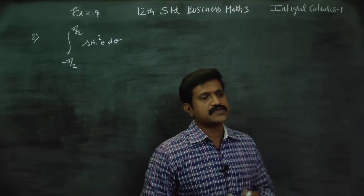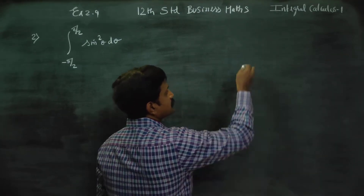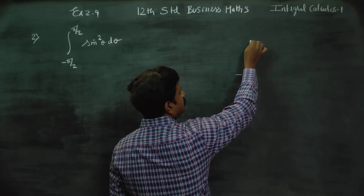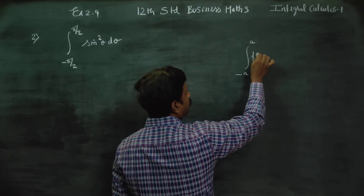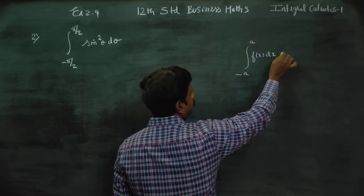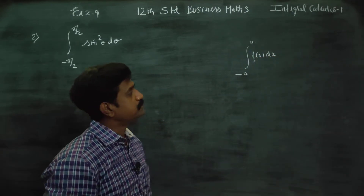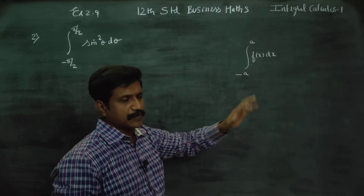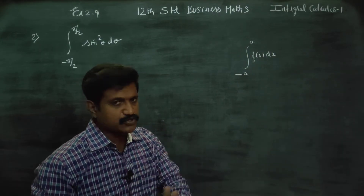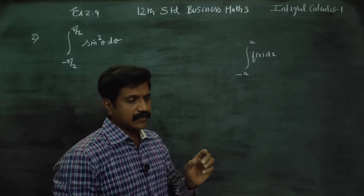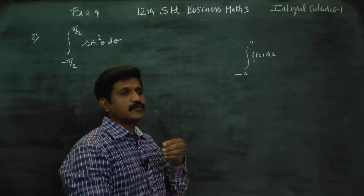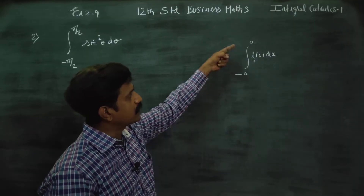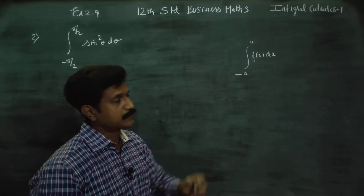As per the special properties of definite integral, for an integral from minus a to plus a of f(x) dx, we can simplify the work. There are several properties available. When the lower and upper limits are of this type, there are two cases.